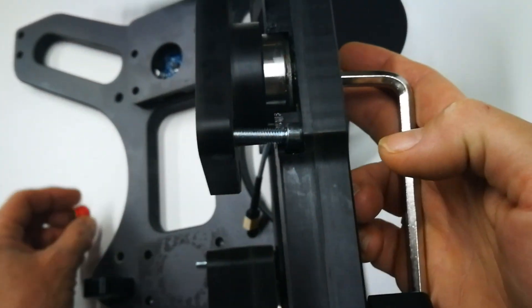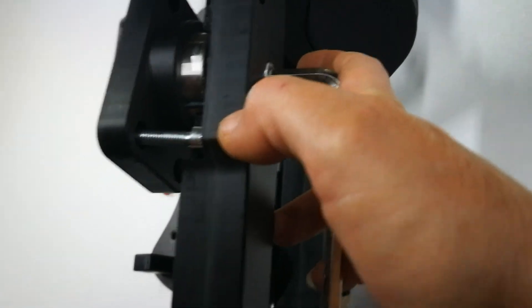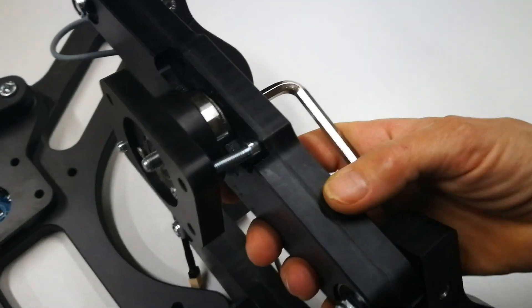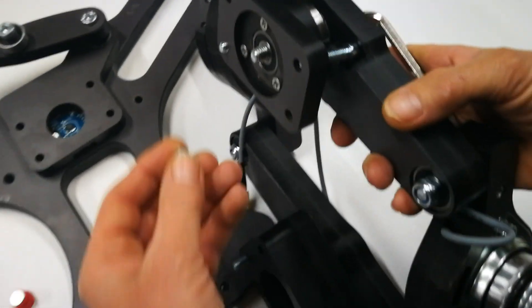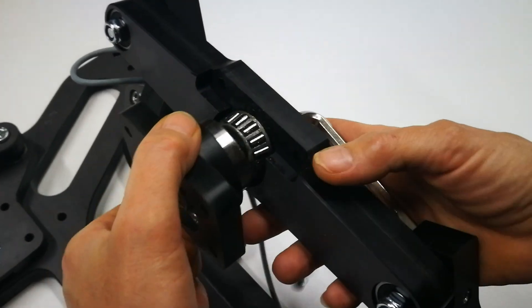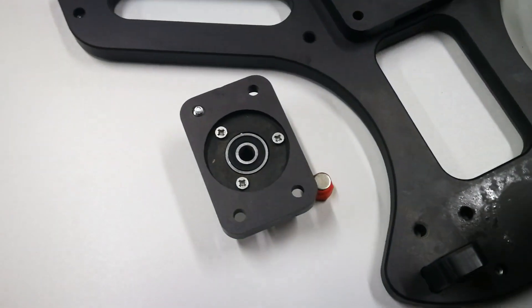You also need to have the allen key from the other side to prevent it from spinning while you untighten it. Once you unscrew it, you can remove the plate.